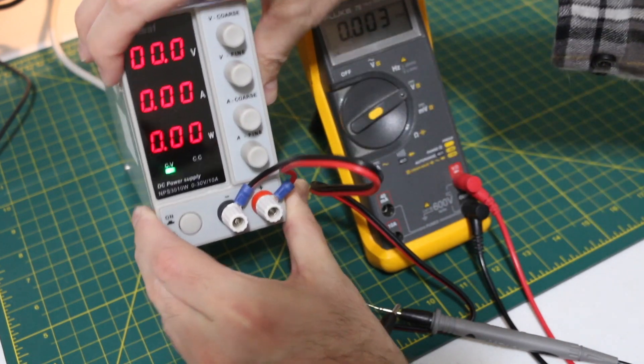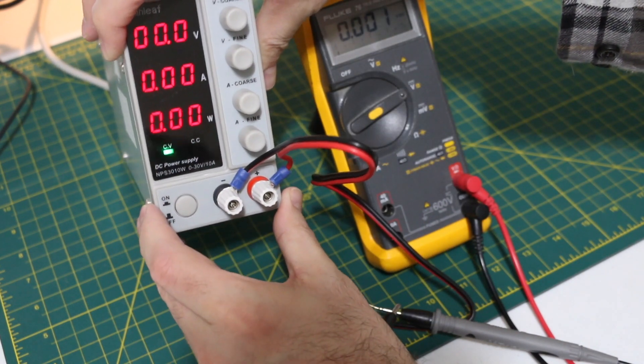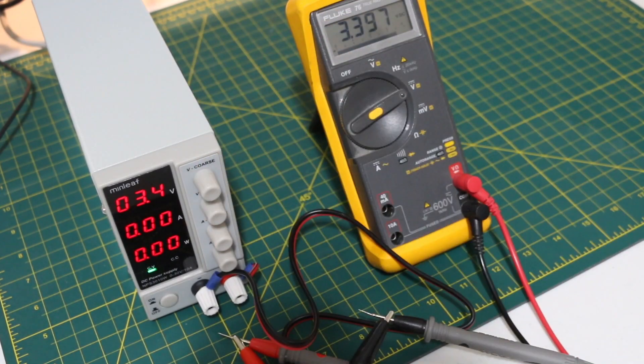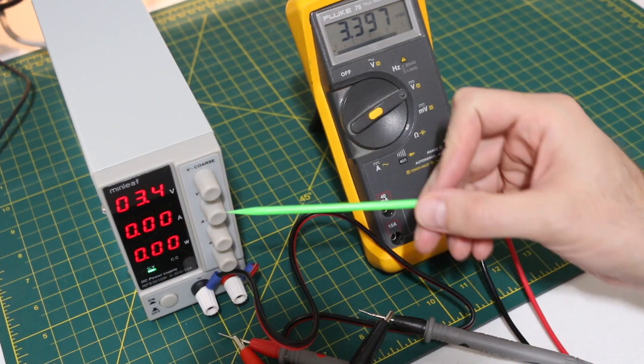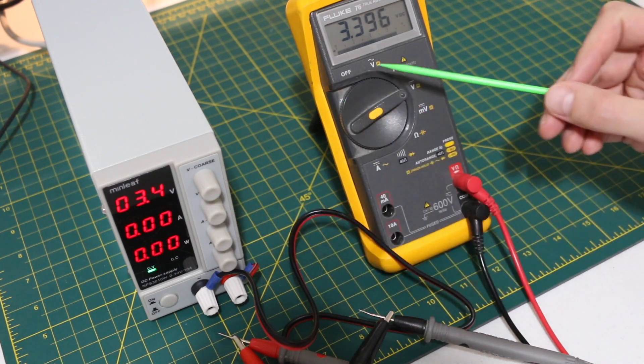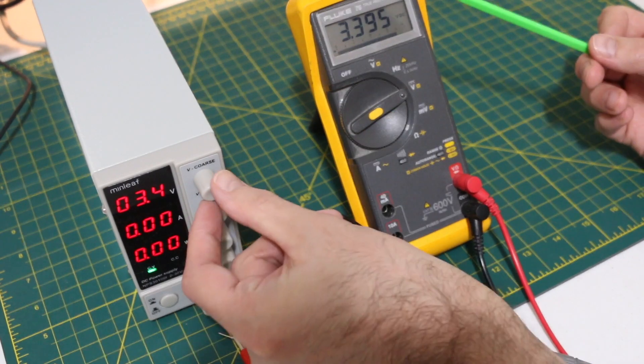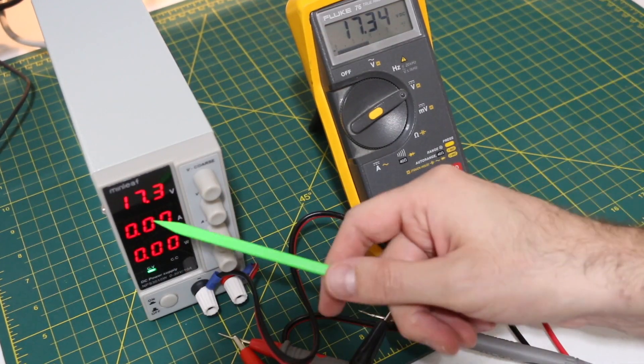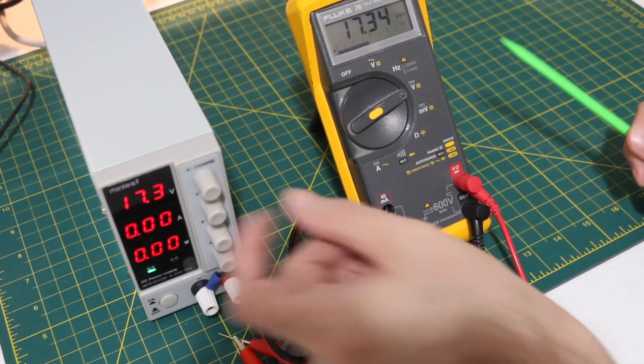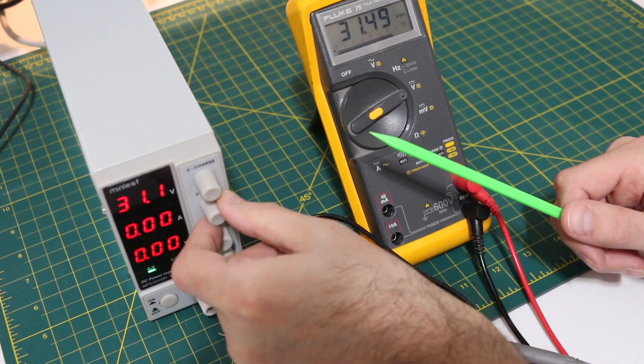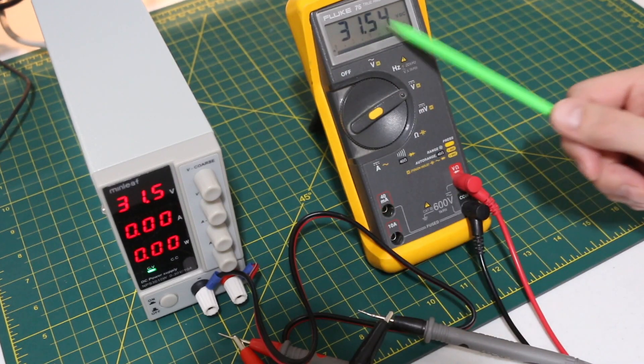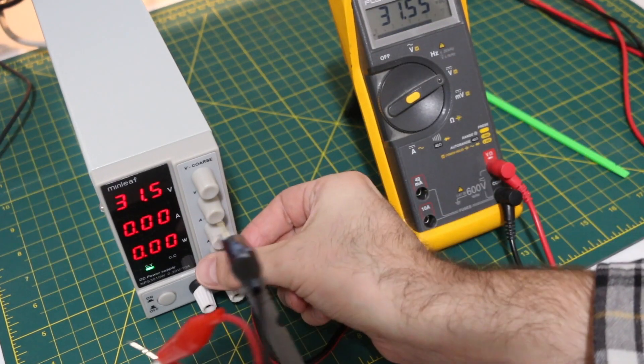Now let's see, just to compare against the meter, we have 3.4 volts and 3.39. If I bring that up, let's just go 17.3 and 17.3. I have to turn the fine all the way up as well, and then I get 31.5 and 31.5.